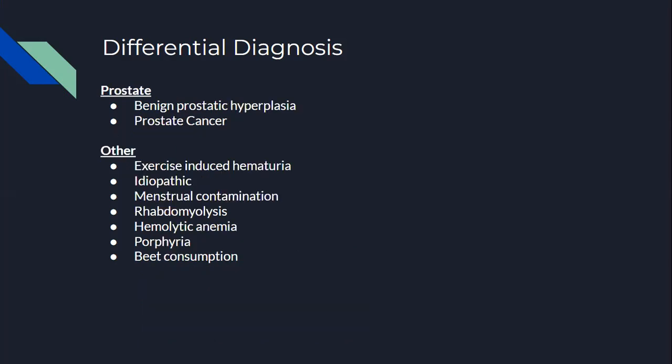At the level of the prostate, we have BPH and prostate cancer — watch out for elderly males above the age of 40. Other causes include exercise-induced hematuria, idiopathic causes, menstrual contamination, rhabdomyolysis — which can be caused by strenuous exercise leading to myoglobinuria that can look like hematuria — hemolytic anemia, porphyria, or excessive meat consumption.